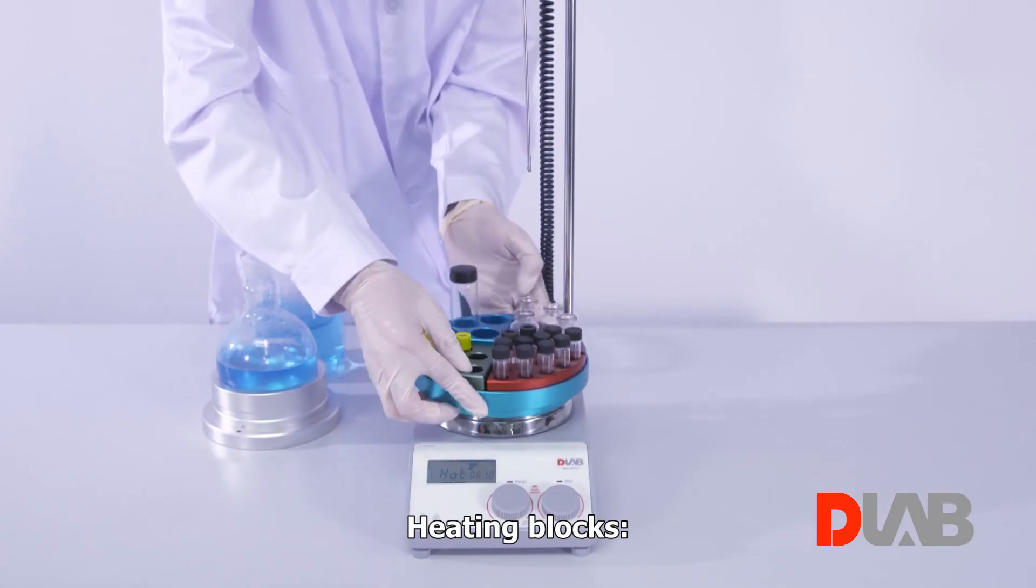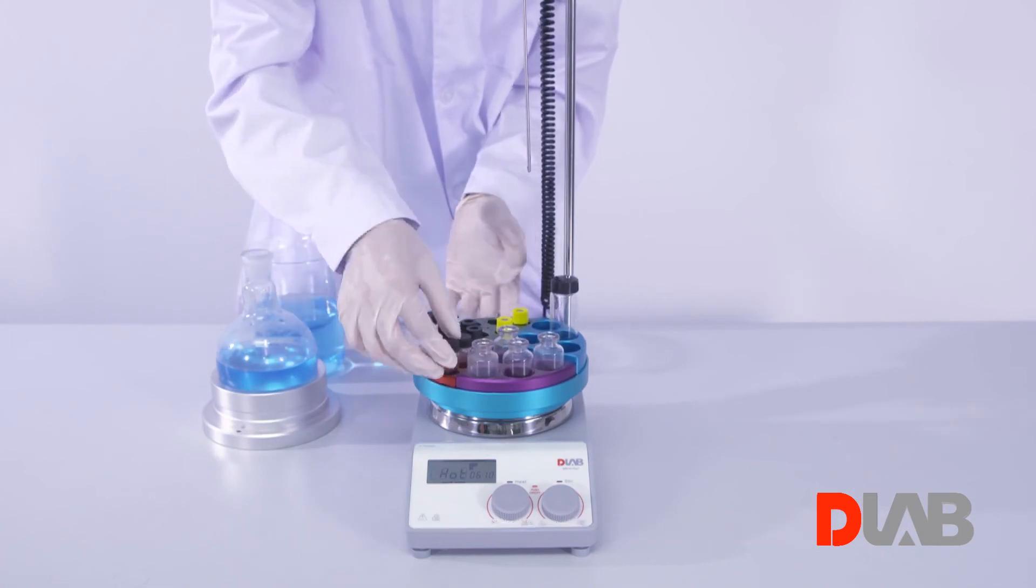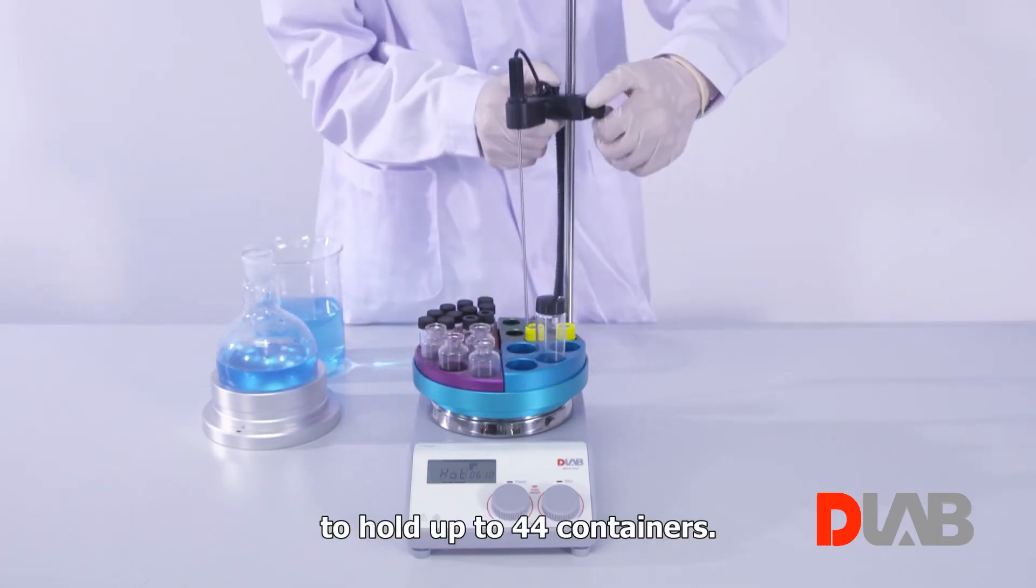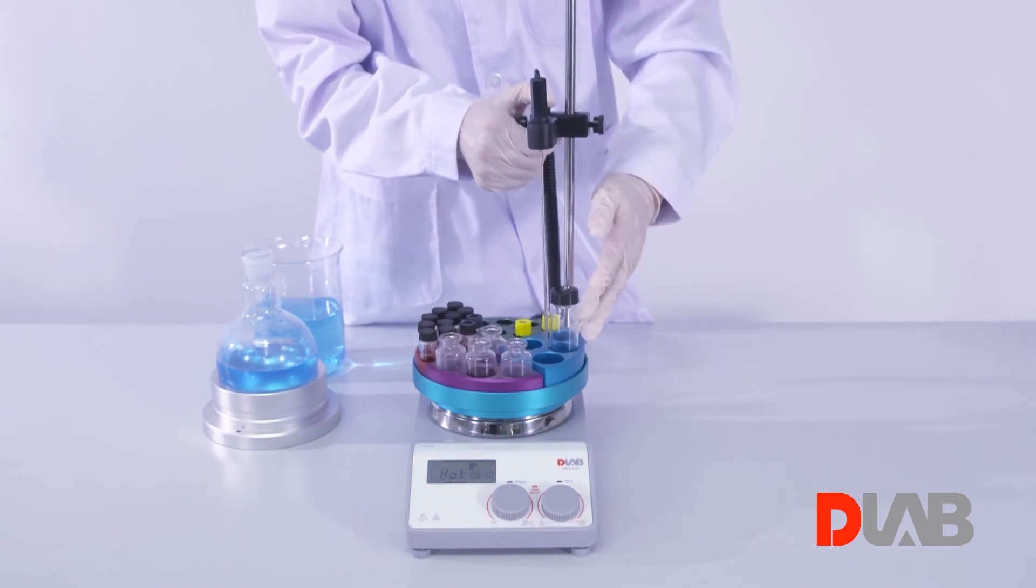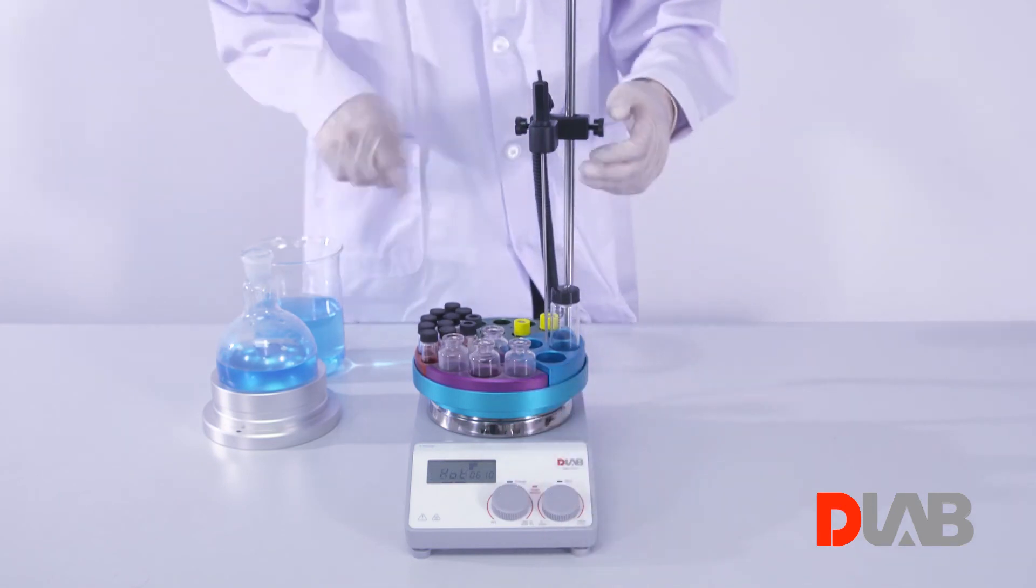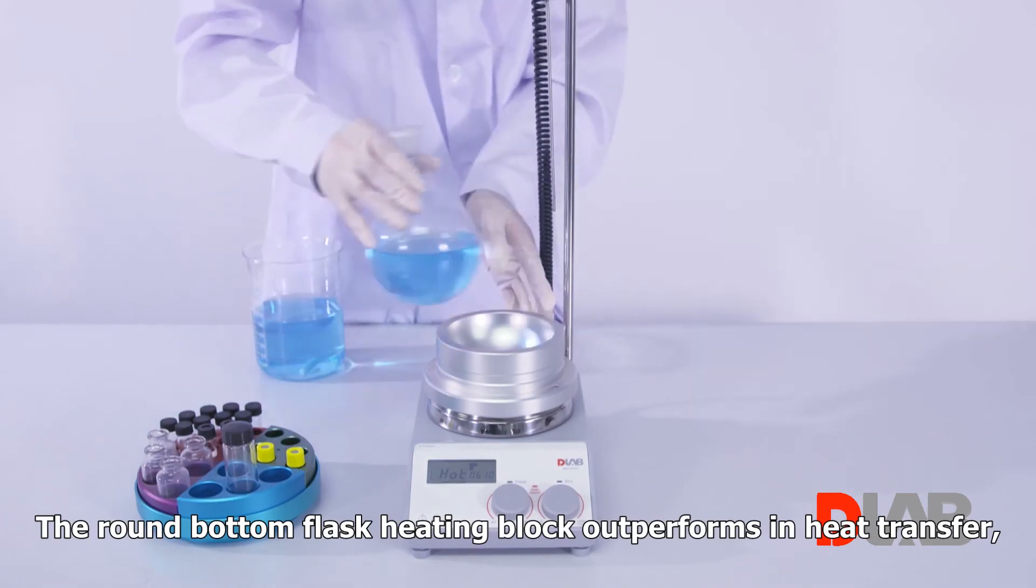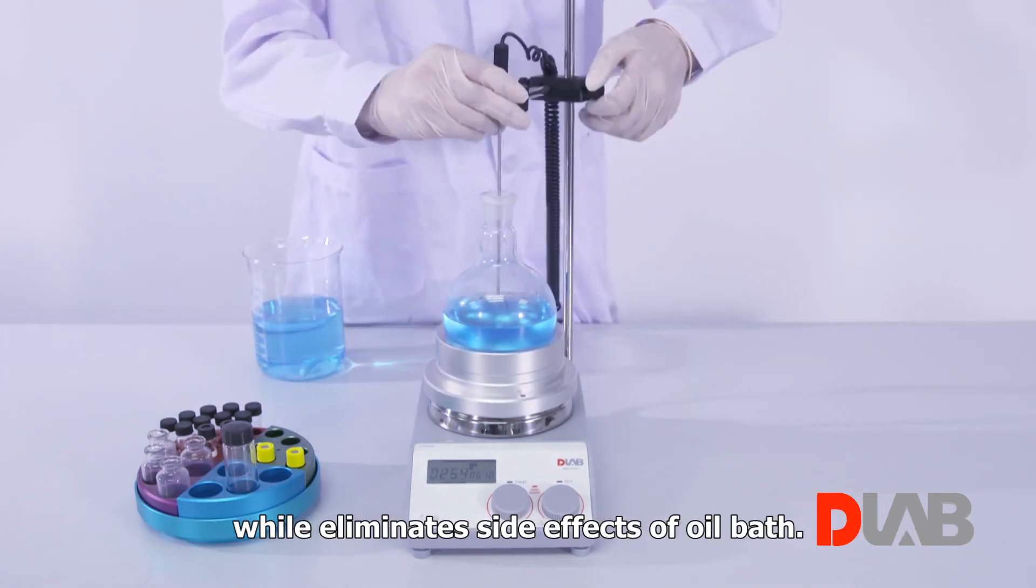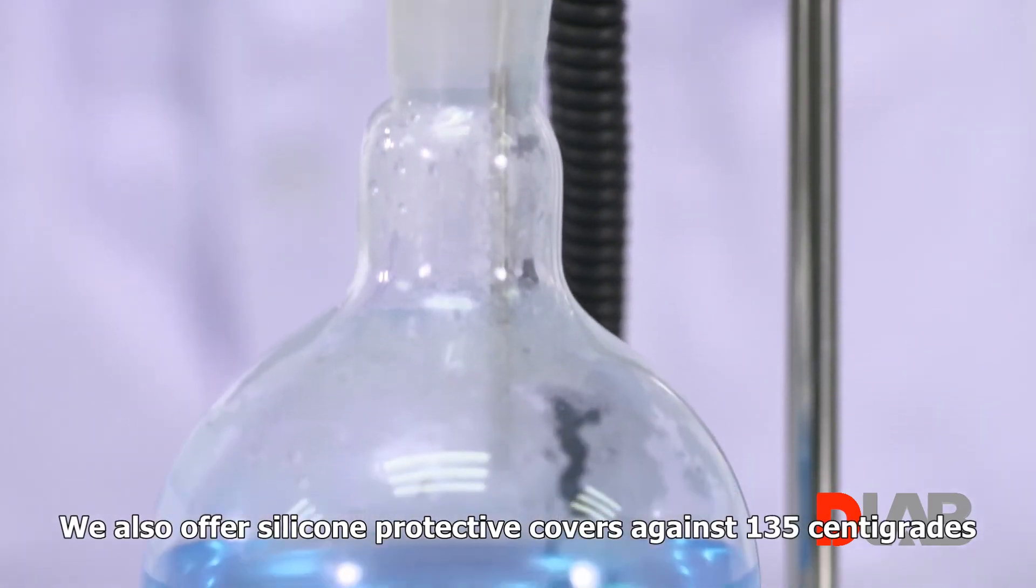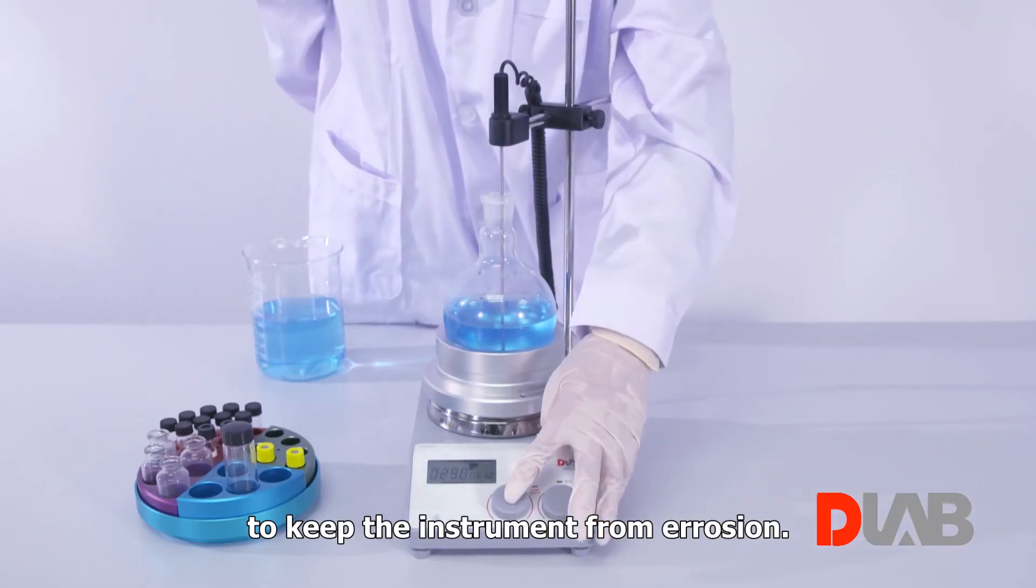Heating blocks. We offer a wide range of heating blocks, including quarter pies, to hold up to 44 containers. The round bottom flask heating block outperforms in heat transfer while eliminates side effects of oil baths. We also offer silicone protective covers against 135 centigrade to keep the instruments from erosion.